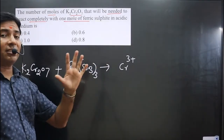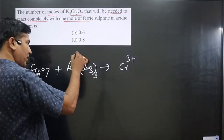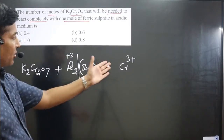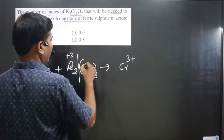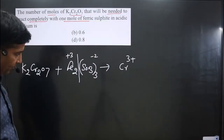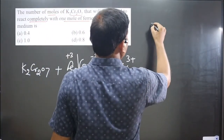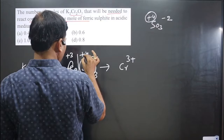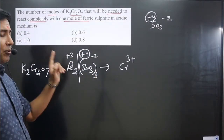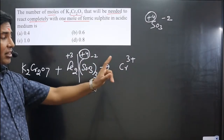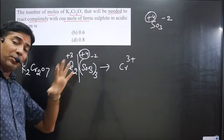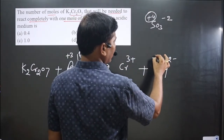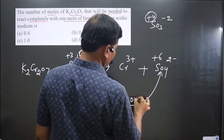In ferric sulfite, iron is already present in its maximum oxidation number (+3), so it will not undergo oxidation. For sulfite (SO₃²⁻), the oxidation number of sulfur is +4. When it undergoes oxidation, sulfur converts into sulfate (SO₄²⁻), where it is present in +6 oxidation number. This is oxidation — an increase in oxidation number. For Cr, this is reduction — a decrease in oxidation number.